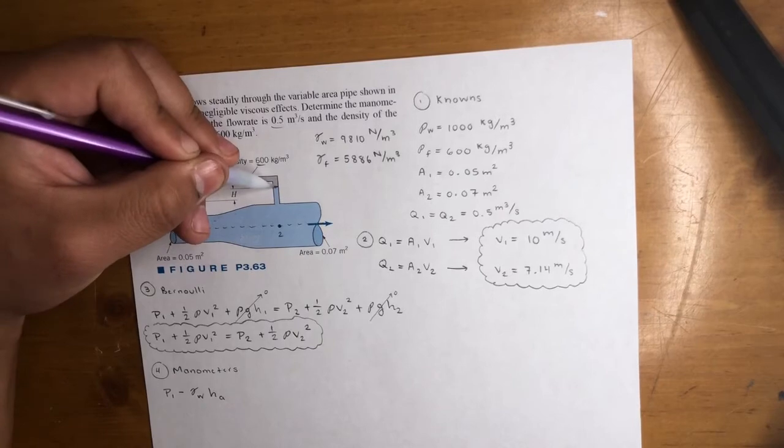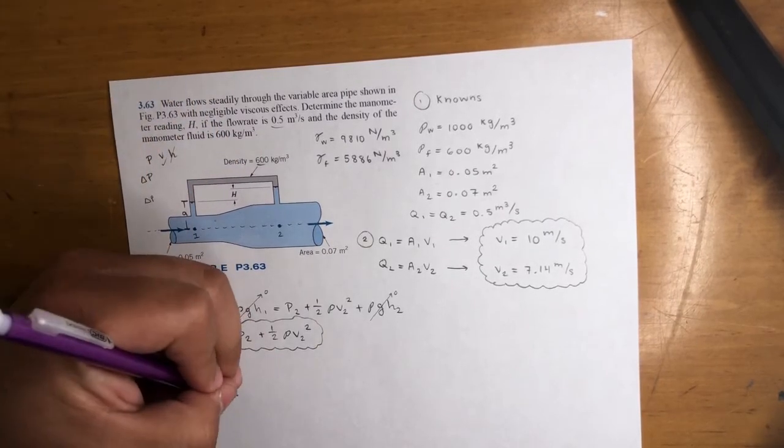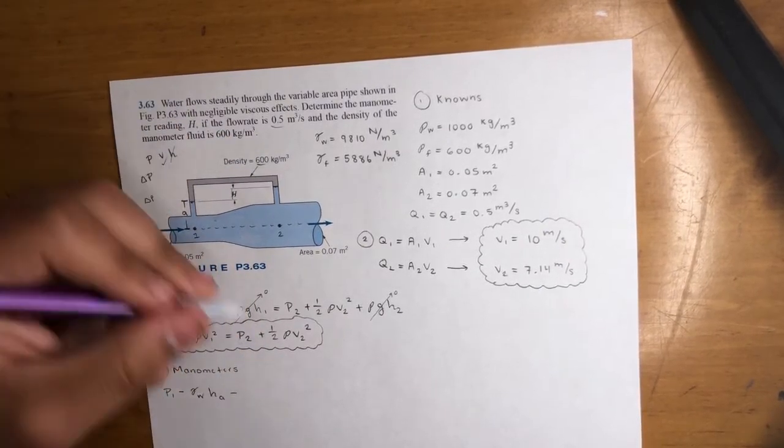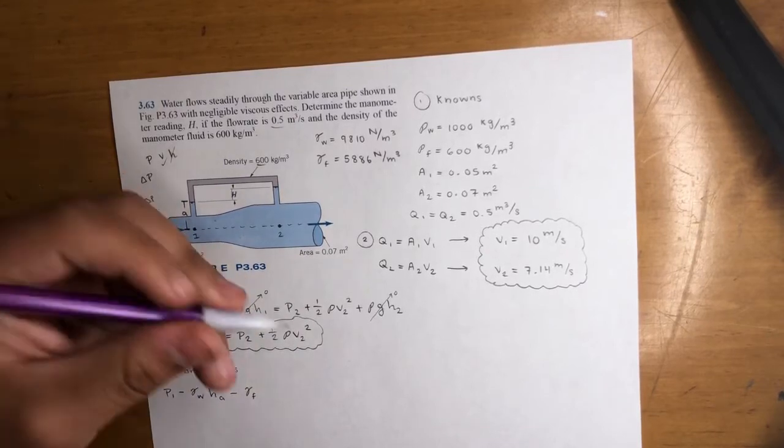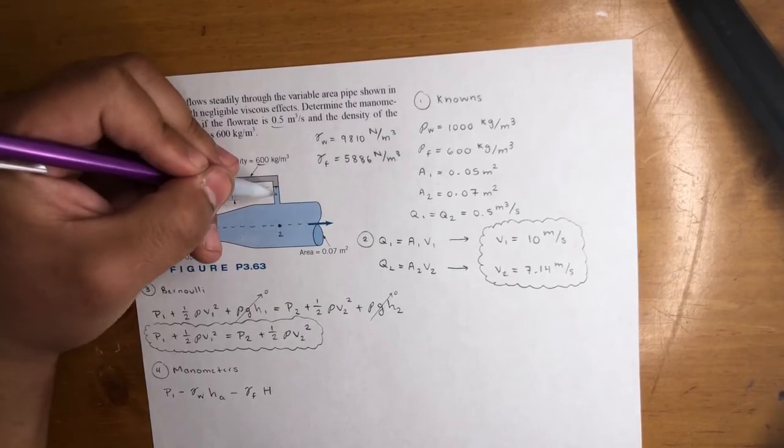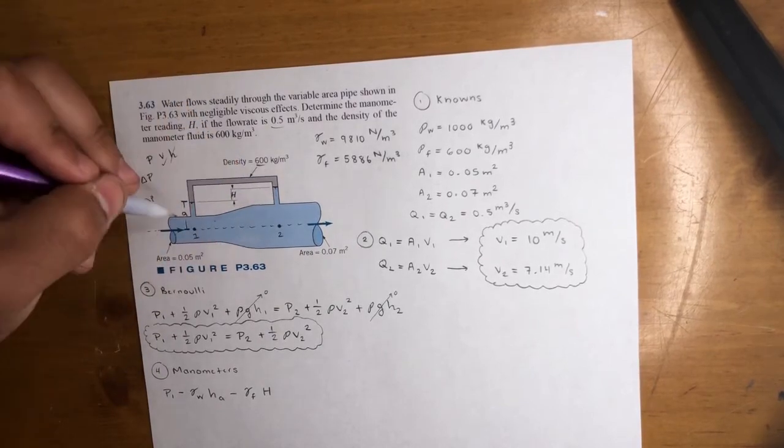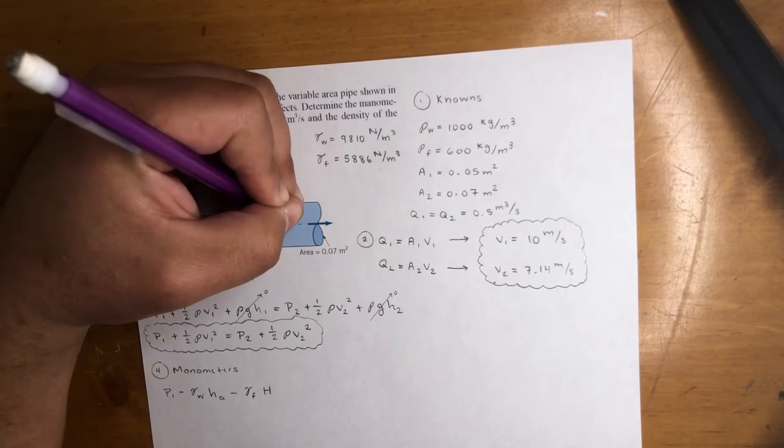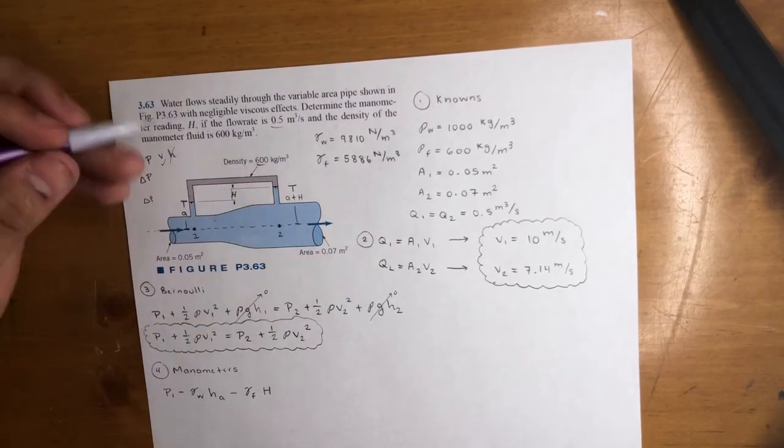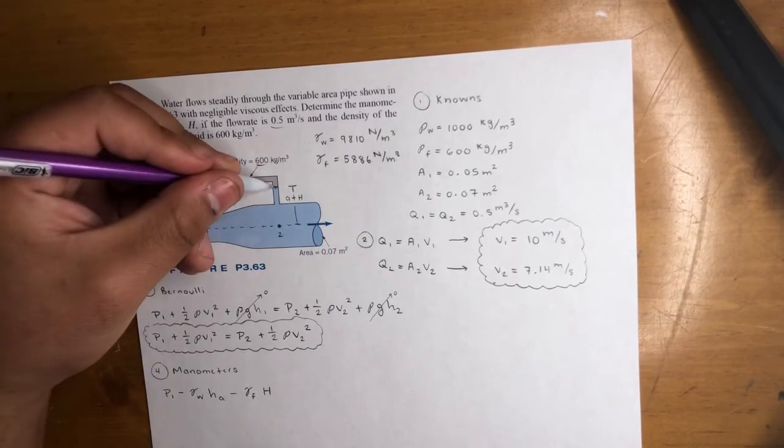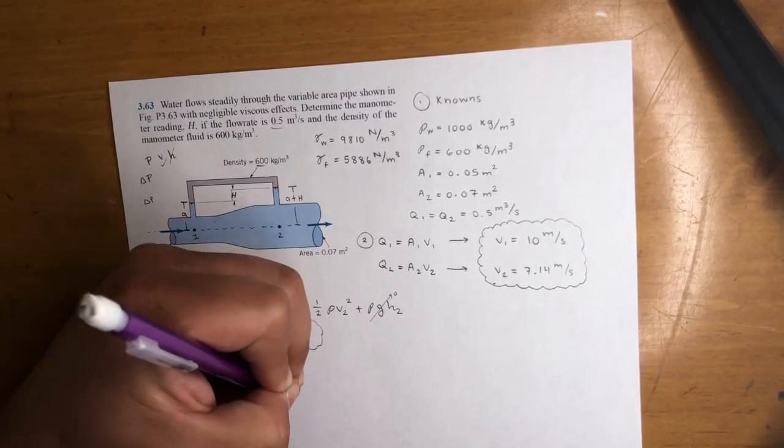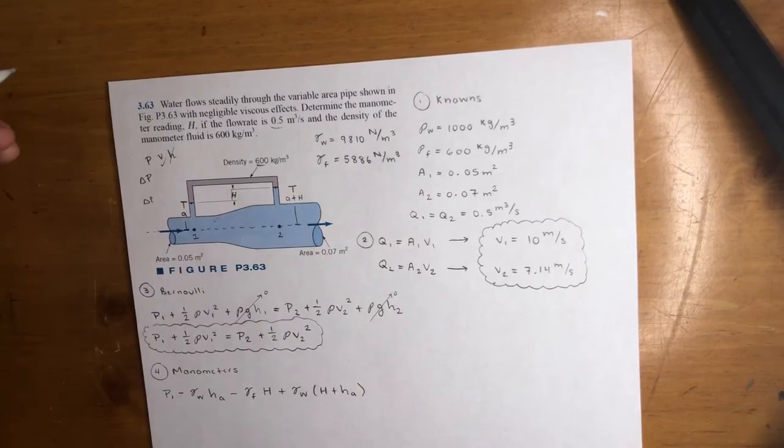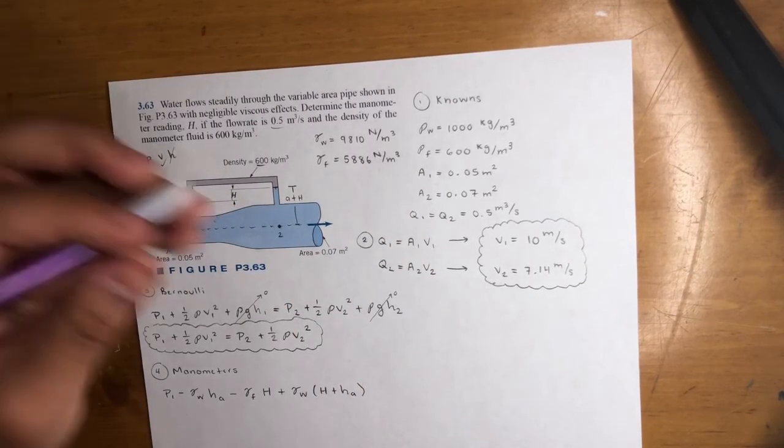Now from this point to this point is the distance H, what we're looking for. So we're going up again from this point to this point, you go up. So it is gamma of the fluid times H. Now from this point to this point, that is A plus H. So A plus H - that's your height right there. It's just this height plus this height. So now we're going from this point to this point. We're going down. So that's positive gamma of water H plus HA. Height A. That's all it means. Finally, we arrive at P2.